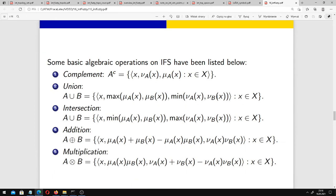Some basic algebraic operations on IFS have been listed below. They are rather standard and typical. Here we define complement. As we can see, we replace membership with non-membership and vice versa. Here we have union: we take maximum of memberships and minimum of non-memberships. Intersection: we take minimum of memberships and maximum of non-memberships.